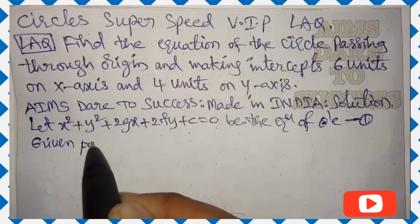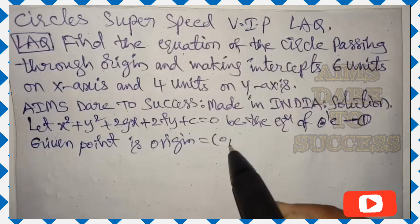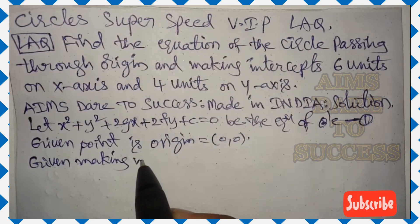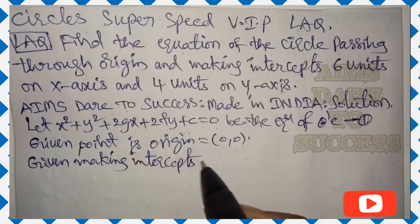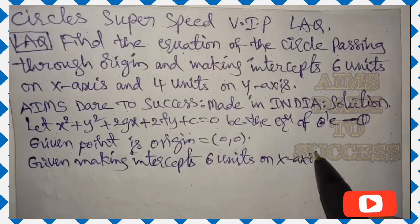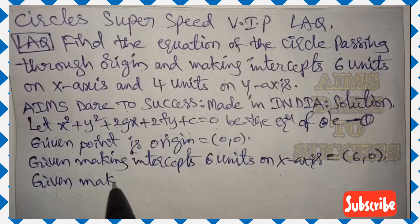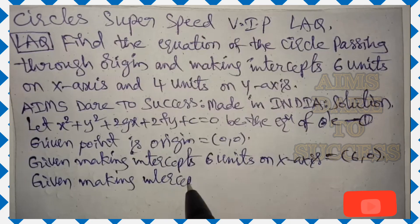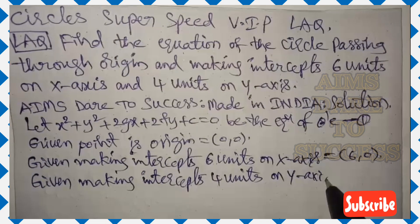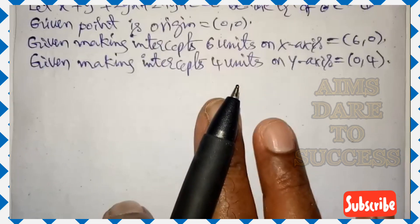Given: the point is the origin — origin means (0, 0). Making intercepts six units on the x-axis: the equation of the x-axis is y = 0, so x-axis intercept means the x value is given when y = 0. Therefore the point is (6, 0). Next, making intercepts four units on the y-axis: the equation of the y-axis is x = 0, so the point is (0, 4).